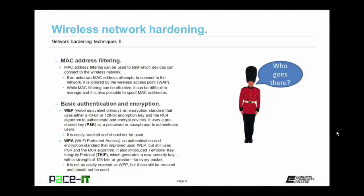One of the first techniques to harden a wireless network is MAC address filtering. MAC address filtering can be used to limit which devices can connect to the wireless network. If an unknown MAC address attempts to connect, it is ignored by the wireless access point — the WAP checks its MAC filter, and if that MAC isn't in the filter, it drops that requester. While MAC filtering can be effective, it can also be difficult to manage, and it is possible to spoof MAC addresses.